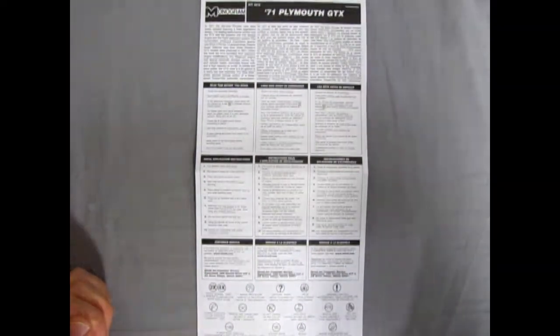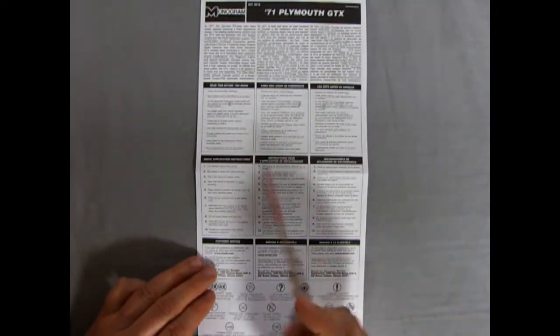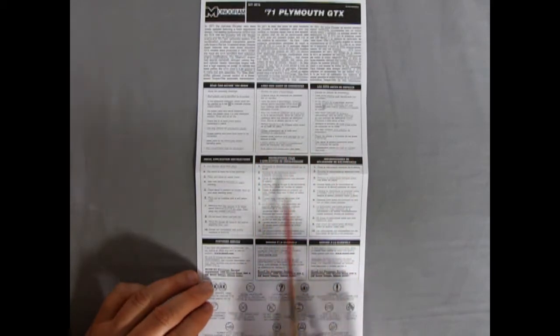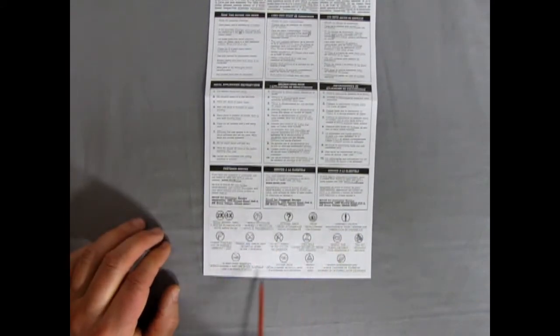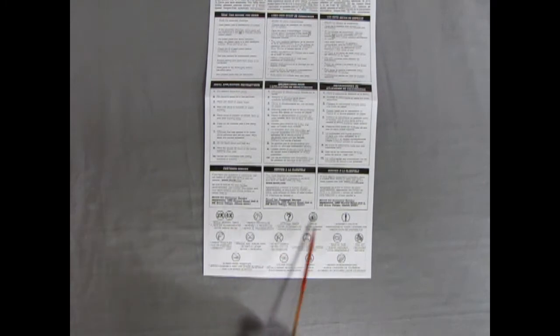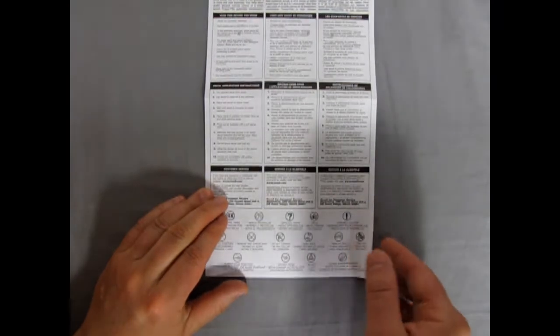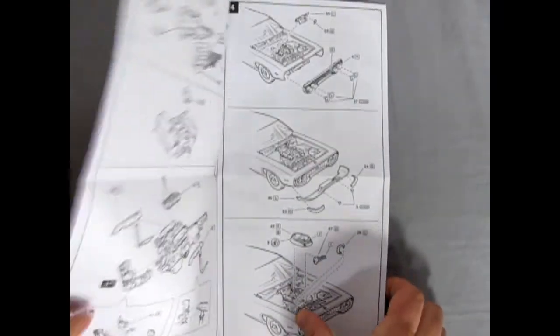Opening this up, we've got all our 'read this before you begin' in many languages, and then our decal application, customer service number, and all the symbols that will appear - like repeat the process, repeat several times, optional parts, decals, cautions, cement, remove and throw away pieces, do not cement, open a hole, remove tape, trim off, rubber band this together, use a sticker decal, add weight. I've never seen half of these in these instructions. They give you all the symbol codes whether or not we're using them is a different story.